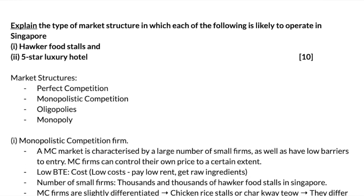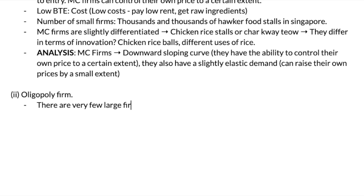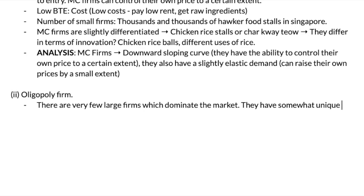So that is really all you need to do for the first part — and just like that, you'll get your 5 marks. Part 2: your 5-star luxury hotel. Very, very obvious — it is actually an oligopoly firm. What are the characteristics of an oligopoly? Firstly, there are very few large firms which dominate the market. Each of them usually tend to have maybe a 20% share. They also have somewhat unique goods — it is not extremely unique, but they still have differences, which is why they're in an oligopoly market.